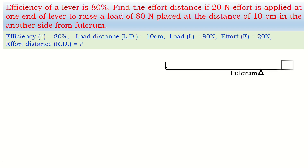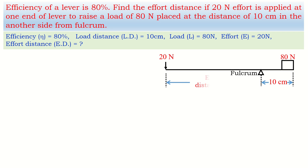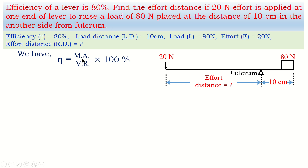For convenience, a diagram is drawn showing the fulcrum, the load of 80 N at 10 cm from the fulcrum, and the effort of 20 N applied at the unknown effort distance. We use the formula: efficiency η = (mechanical advantage / velocity ratio) × 100%.